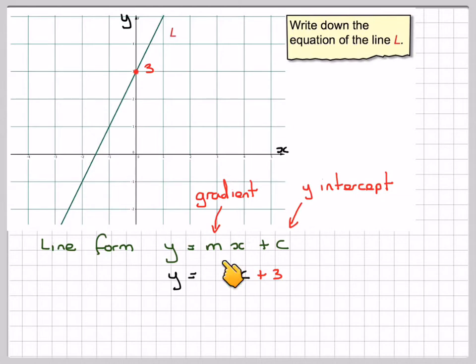Now we have to find the value of m, which is the gradient, which is a measurement of slope. Now to do that we need to take two convenient points.